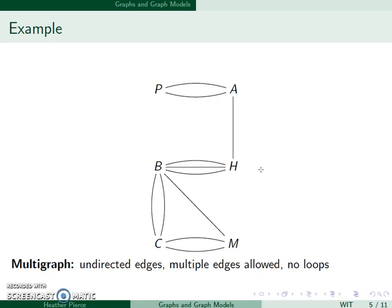We can have multiple loops in a graph, and this is called a multigraph. Our edges are still undirected. We allow multiple edges, but we still do not allow loops.